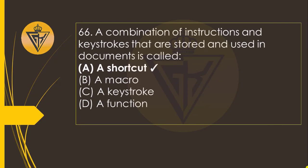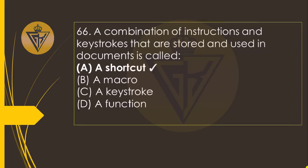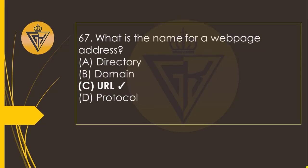A combination of instructions and keystrokes that are stored and used in a document is called the option A: a shortcut. What is the name for a web page address? The option C: URL.